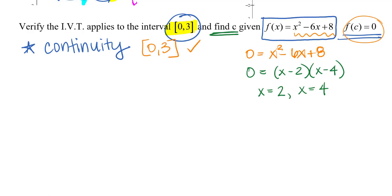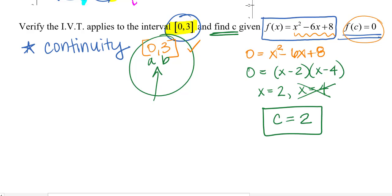Only one of these is the c value. Why? Because I'm looking from zero to three. I'm restricted to that interval. Nothing outside that interval is going to be evaluated or looked at or a part of my problem. So, x equals four is not what we're talking about. So, I would say my c value is two. Your c value will specifically be in that interval between a and b.